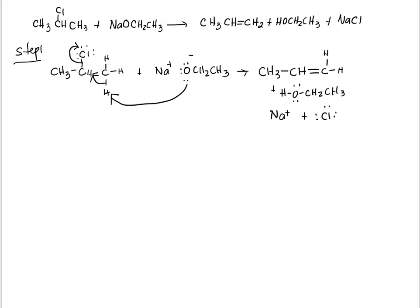So the mechanism is E2 elimination, and the slow step involves two things: the alkyl halide and the base.